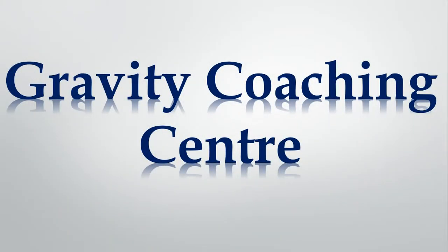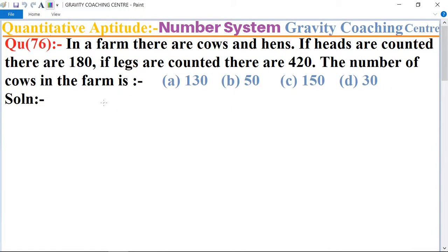Welcome to our channel Gravity Coaching Center, quantitative aptitude chapter number system, question number 76. In a farm there are cows and hens. If heads are counted there are 180, and if legs are counted there are 420.